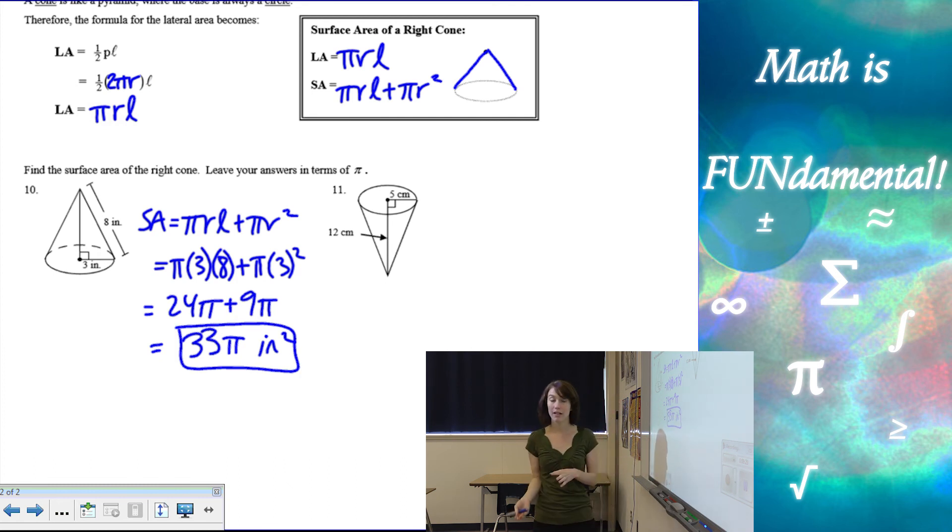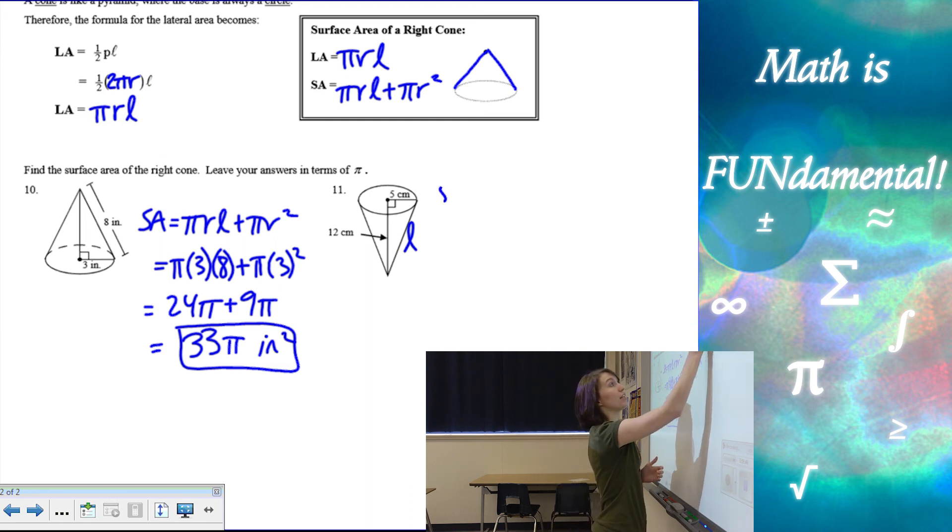So, if I'm given the lateral area and the radius, it's just a matter of using our formulas. Now, in this case, the next example, I have the height of my cone and the radius, but I don't have my slant height. So, I need to find it. And, again, we have a right triangle, so I can use Pythagorean theorem. 5 squared plus 12 squared equals l squared. So, l ends up being 13.